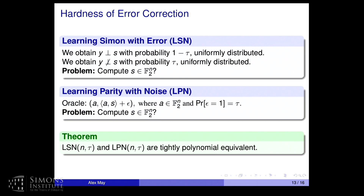Surprisingly, the weird distribution from IBM Q can be smoothed into something described as LSE — characterized by a single error parameter. There is a tight polynomial reduction to LPN (Learning Parity with Noise): if you get a non-orthogonal vector, you can add it in to switch labels from zero to one. This is bad news in that LPN is generally hard, but it also depends on the error rate. If the error is not too large, LPN can sometimes be solved. This actually allows us to measure IBM Q's error in a framework we understand.